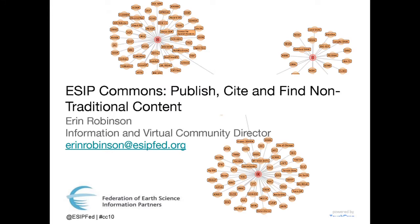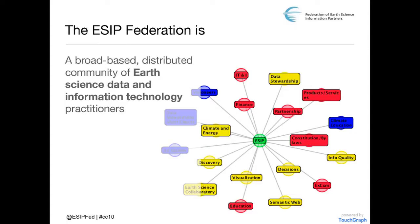I'm Erin Robinson. I work for the Earth Science Information Partners, or ESIP, and this is a view of our community. There are three main member organization types: application developers, researchers, and big data centers. And they come together in areas like data discovery, earth science collaboration, data stewardship, and information quality, because they have common issues related to earth science information and technology.